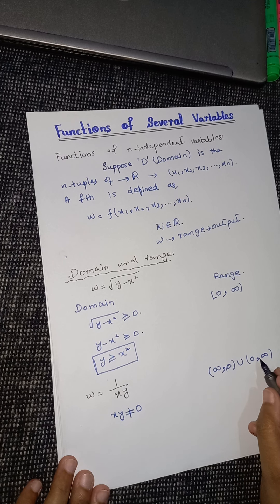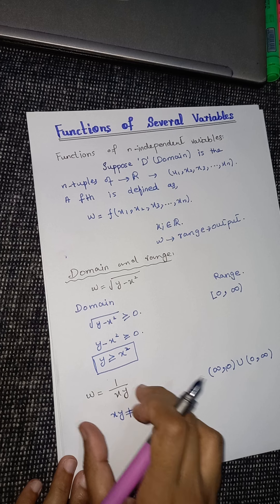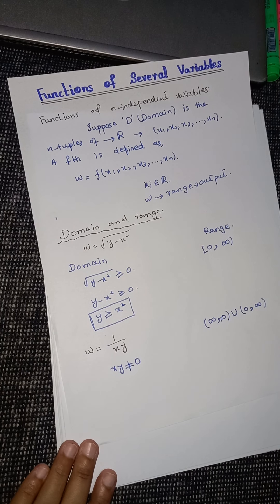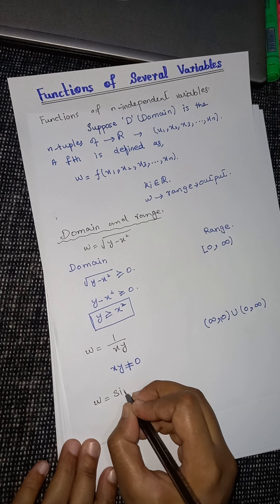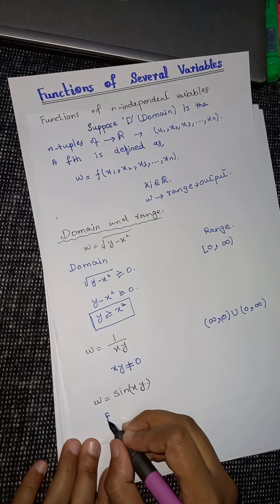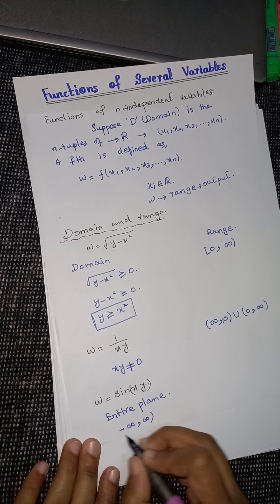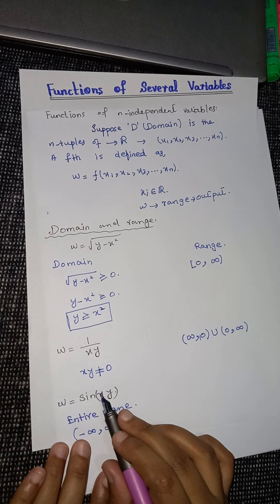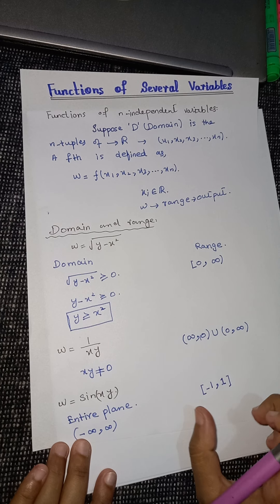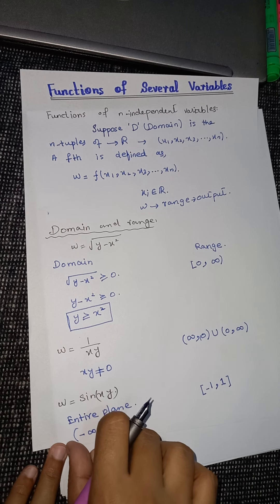So the range of w = 1/(xy) would be (−∞, 0) ∪ (0, ∞) — meaning we are not including 0. The function can give negative and positive values but it cannot give us the value 0. Now if we look at the function w = sin(xy), its domain is the entire plane — you can substitute all values from negative infinity to infinity. But the range of the sine function is [−1, 1], so the range remains [−1, 1].